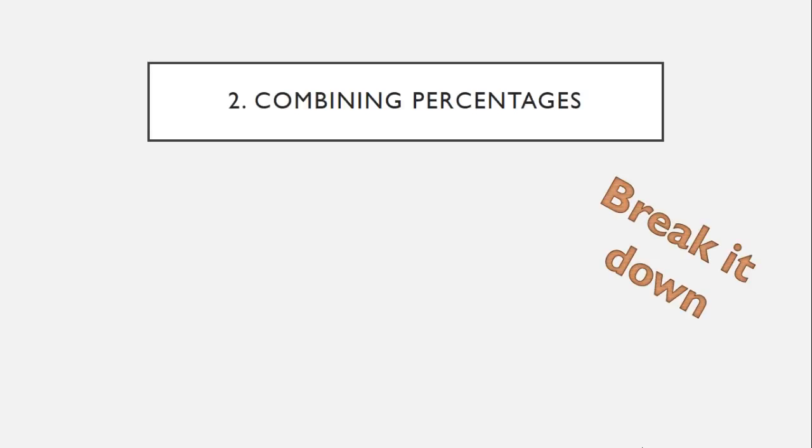Second thing, combining percentages. Similar idea, we need to break down the question. Say you want to do 27 percent of 350. Looking at that's a bit intimidating, you're not going to get that straight away. It doesn't pop into your head. Like 10 percent is very obvious, but we can use that idea that 10 percent is very obvious to find 20 percent. So we start by finding 10 percent. Do 350 divided by 10, that tells us that 10 percent is 35. Hence 20 percent has to be 70.